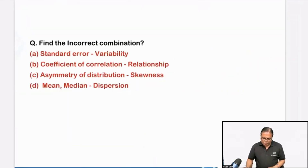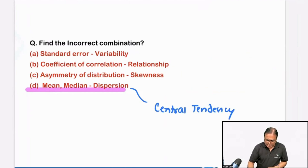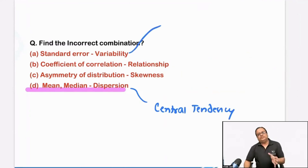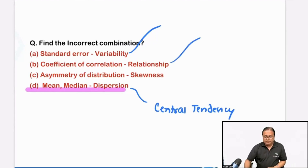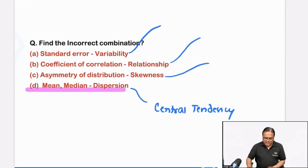Question number 4: find the incorrect combination. This was a fairly easy question. Biostatistics was very easy this time. Mean and median are not measures of dispersion — they are measures of central tendency. Standard error represents one type of variation or dispersion. Coefficient of correlation found through a scatter diagram is a relationship between two quantitative variables. Skewness is when data is not symmetrical like a normal distribution — it is asymmetric. So that was an easy question; we were asked to find the incorrect combination.